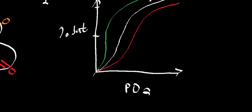Each one of these curves represents a different pH. From Lehninger Principles of Biochemistry, sixth edition: the bottom curve is pH 7.2, the middle is 7.4, and the top one is 7.6. This means the curve shifts depending on what the pH is.